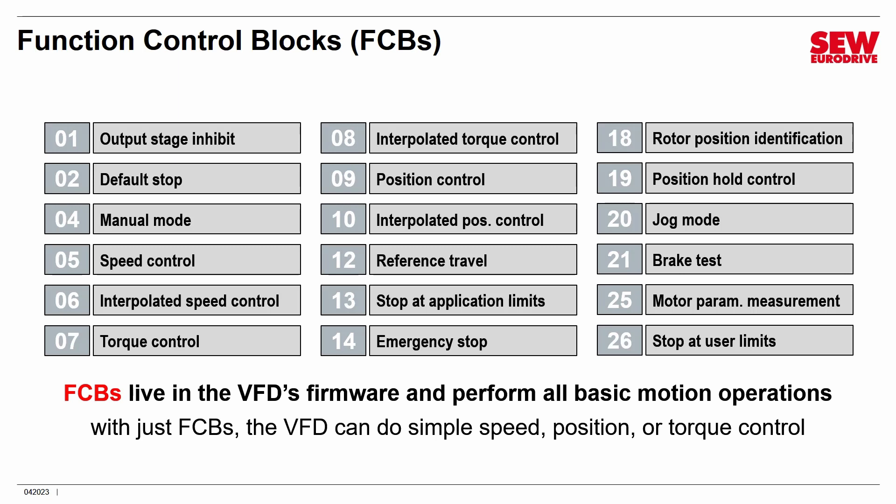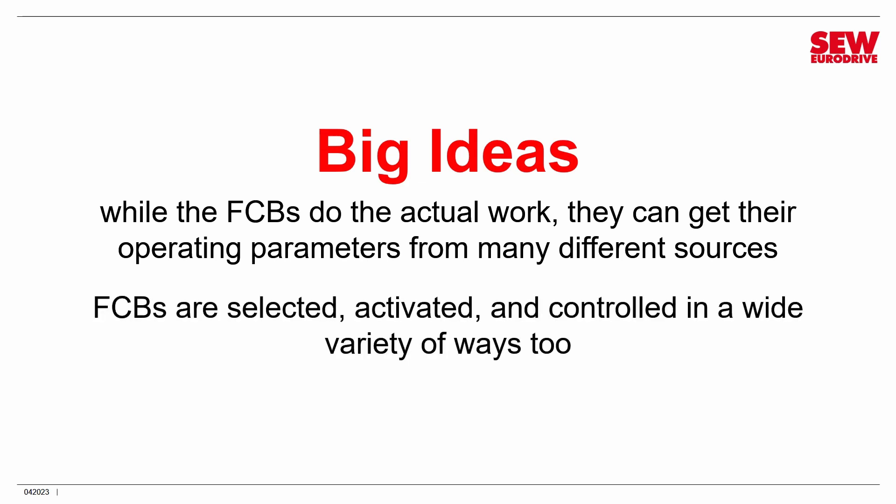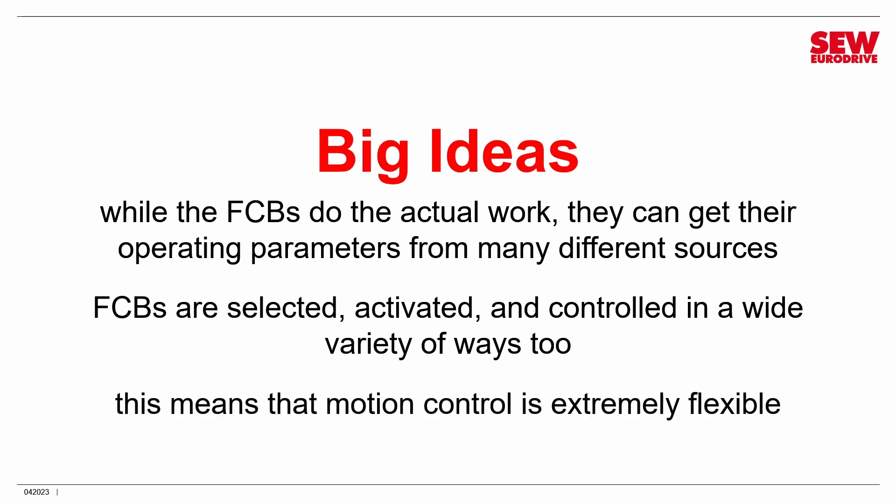Each FCB is almost just like a little routine that can do one specific kind of motion. With just the FCBs, the VFD can do simple speed, position, or torque control, which in many applications is all you need. Simple shaft-spinning applications greatly outweigh the exciting ones like robotics and camming. FCBs alone can do an awful lot, and that's what we're going to be playing with in the next few labs. Now, a few big ideas: while the FCBs do the actual work, they get their operating parameters from many different sources — that is why the Movi-C product is such a powerful and flexible product.